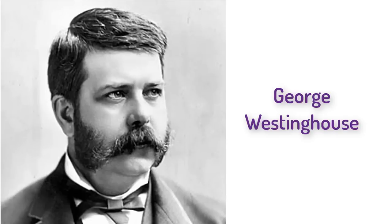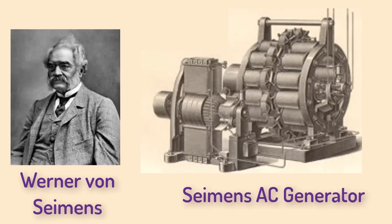Despite this, Westinghouse had a vision that AC was the future. He sent a message to a young engineer named Guido Pantaleone, who was in Italy for his father's funeral, to get the patent rights to the transformer sight unseen — which he did. Pantaleone also got some Siemens generators, even though Siemens himself assured him that, quote, "there's nothing whatever in alternating current. It was pure humbug," and that his self-excitation system had rendered alternating current useless.